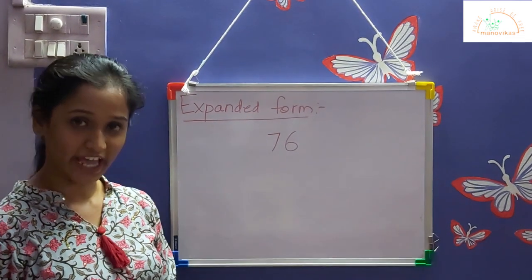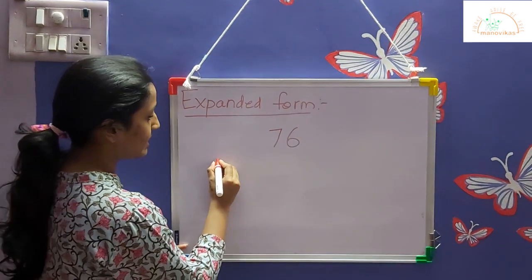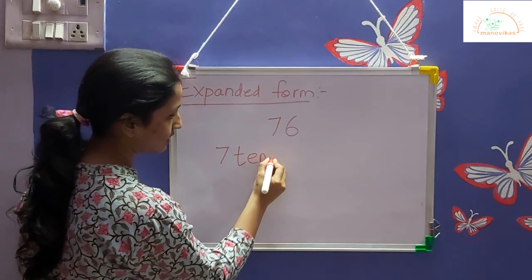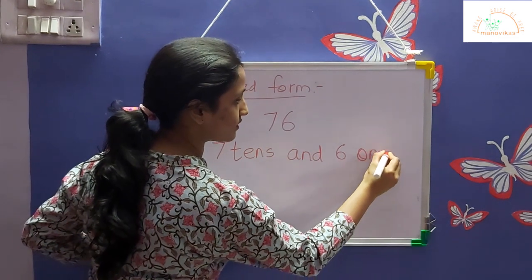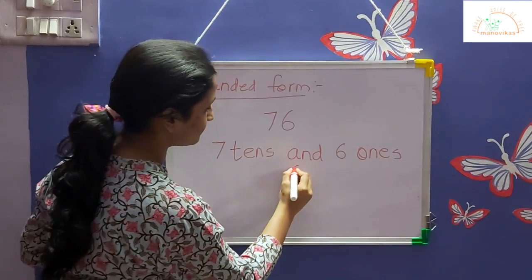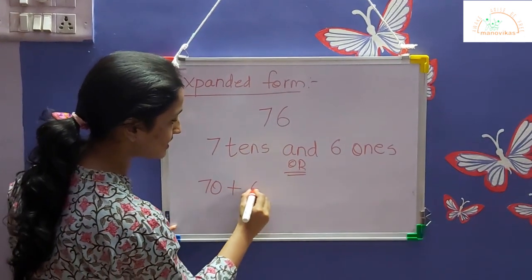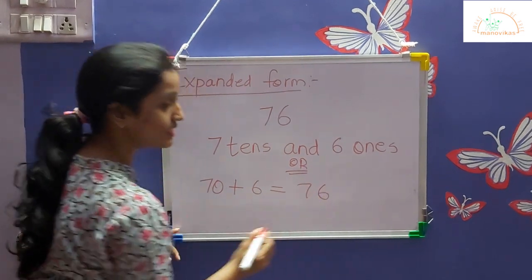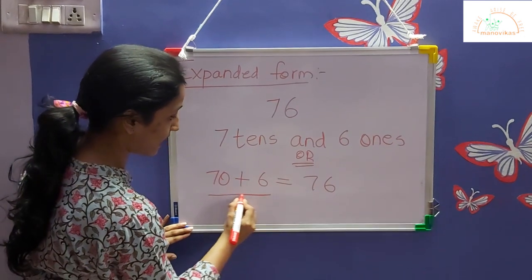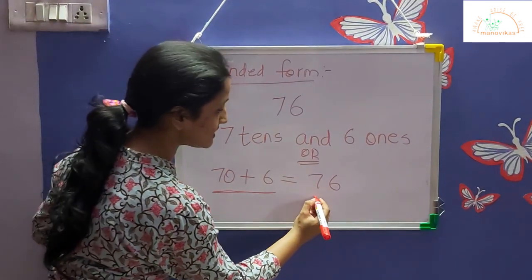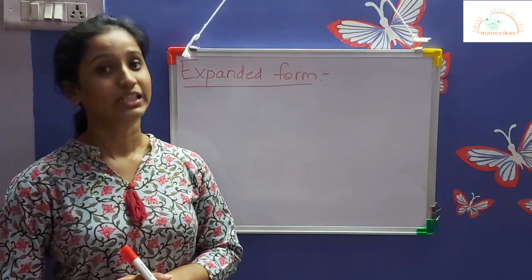Let us solve one more example. We have the number 76. So the expanded form will be 7 tens and 6 ones, or 70 plus 6 is equal to 76. This is known as the expanded form and this is known as the standard form. Let us now move on to three-digit numbers.